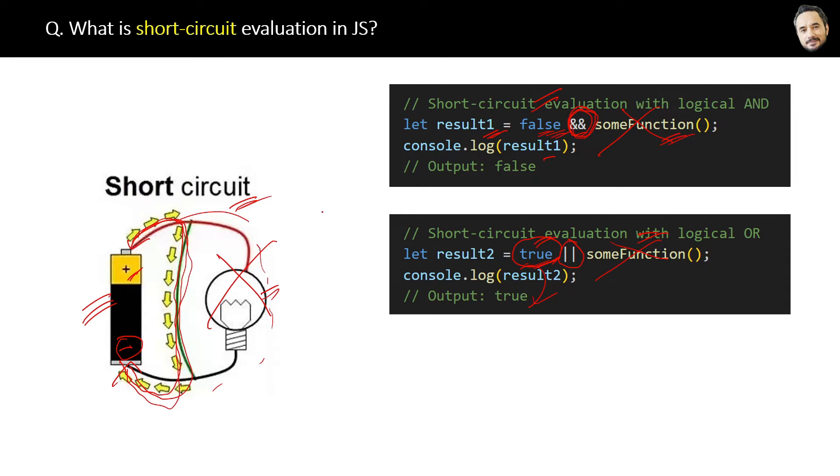And our operator will evaluate the right side to get the final value. Finally, the conclusion is short circuit evaluation stops the execution as soon as the result can be determined without evaluating the remaining sub-expressions. Now you will never forget this concept for the rest of your life.